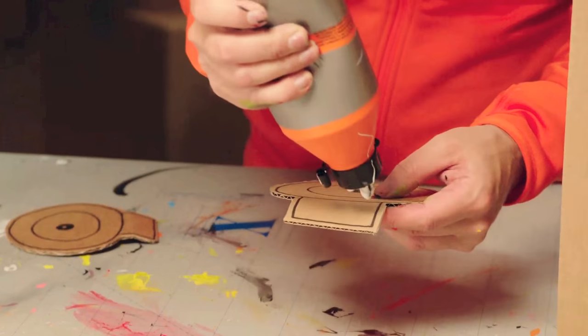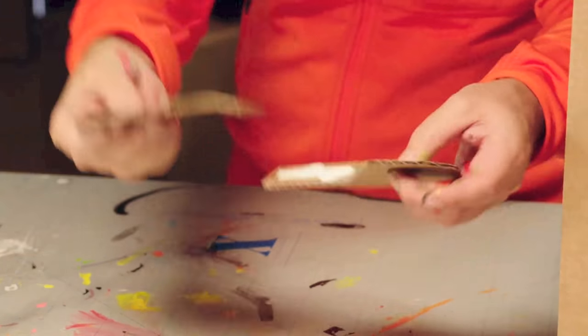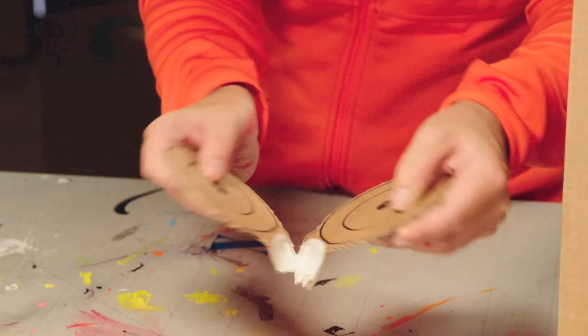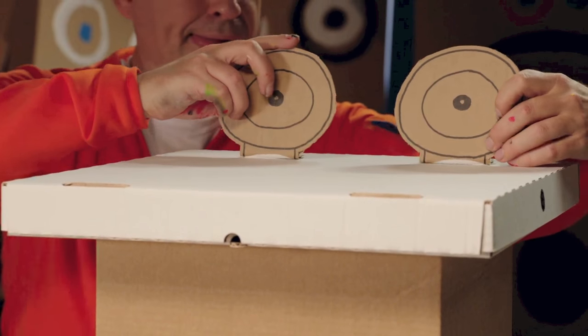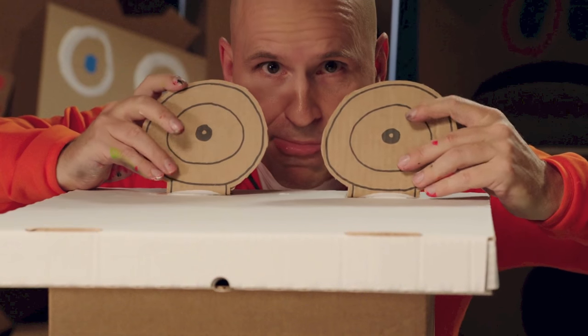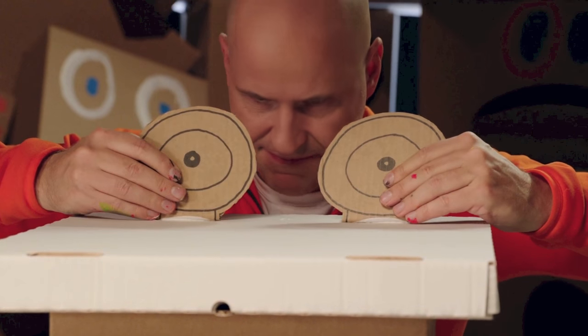Now a dab of glue on one eye. Spread some glue on to the other eye and place them just where you want them. You can either hold the eyes down until the glue has dried a little, or use a bit of sticky tape to keep them in place.